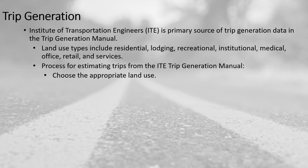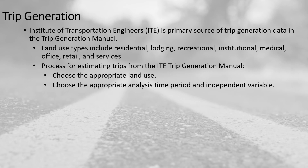The process of estimating trips from the ITE Trip Generation Manual starts with choosing the appropriate land use — is it consistent with one provided by ITE? Next, choose the appropriate analysis time period: weekday, weekend, morning peak hour, afternoon peak hour, peak hour of the generator, or peak hour of the adjacent roadway. Then select the independent variable, which may include overall gross square footage, number of seats for a restaurant, or number of fueling positions for a gas station. Multiple independent variables are often available for selection.